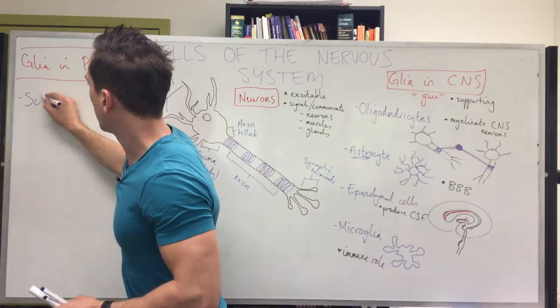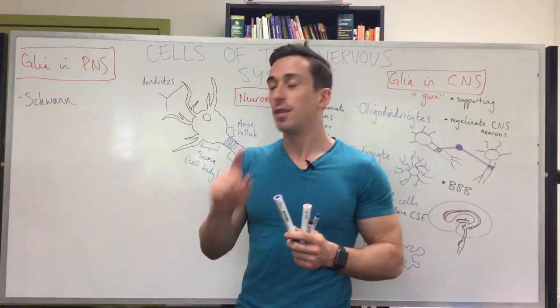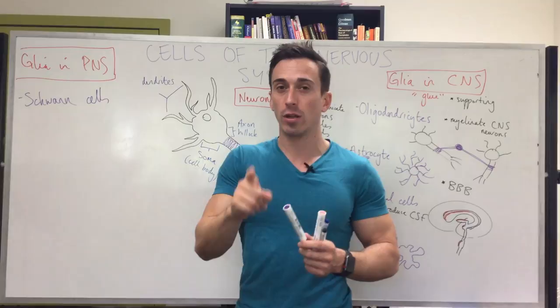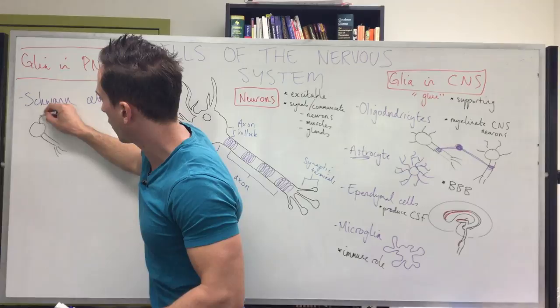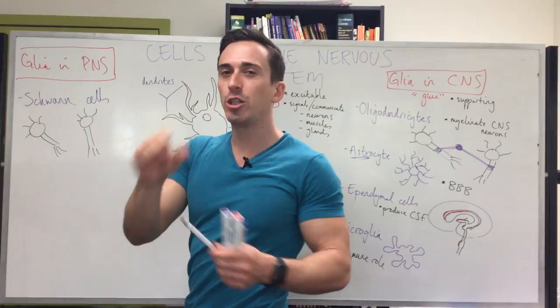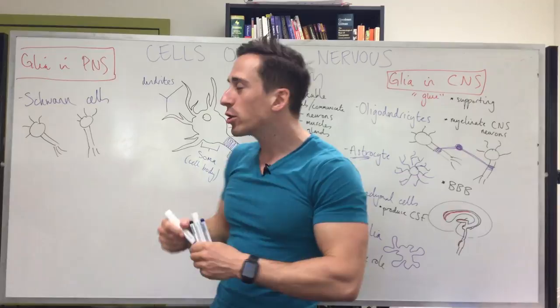In the peripheral nervous system there are two types of glia. The first are Schwann cells, which create the myelin in the peripheral nervous system — they are the myelinating cells of the PNS. However, they do it differently from oligodendrocytes: one oligodendrocyte creates multiple myelinated regions by projecting out and wrapping around multiple axons, whereas one Schwann cell creates one myelinated region, with successive Schwann cells lined up along the axon.